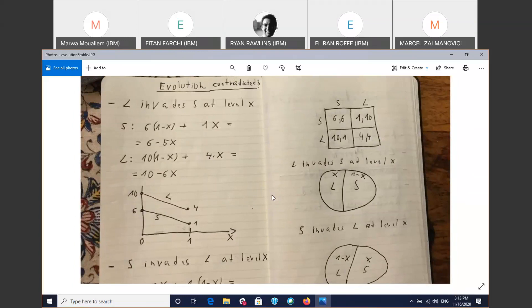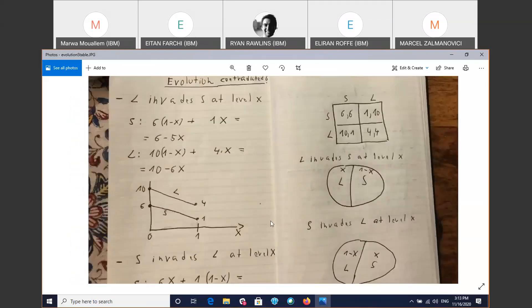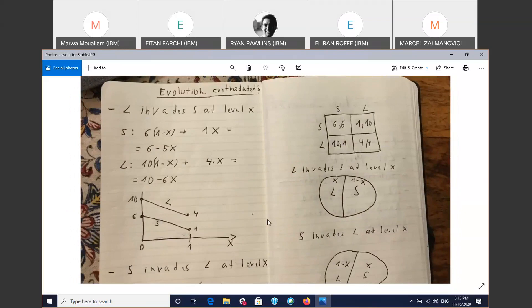So the evolutionary stable strategy here is L, because S cannot invade L, and if L invades S, it just succeeds. So one interesting thing about this: you see the dynamic, right? The evolutionary stable, the whole notion is dynamic. And it has to do with this invasion of one gene over another gene, one type of animal over another type of animal. Or, you know, in some application of game theory, one type of field over another type of field. So that's one interesting point.